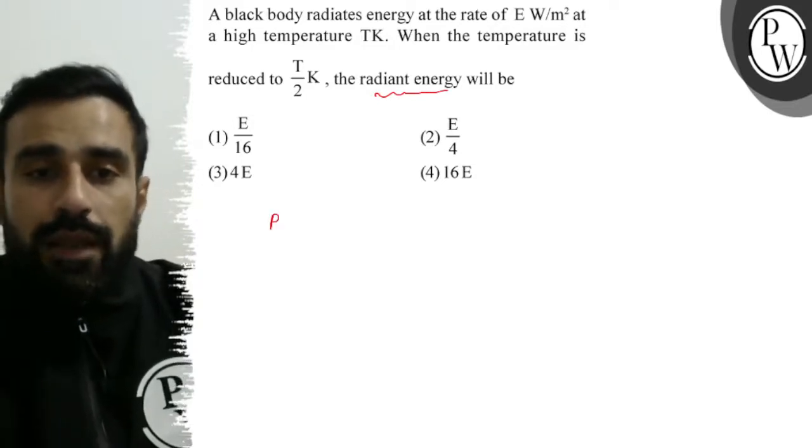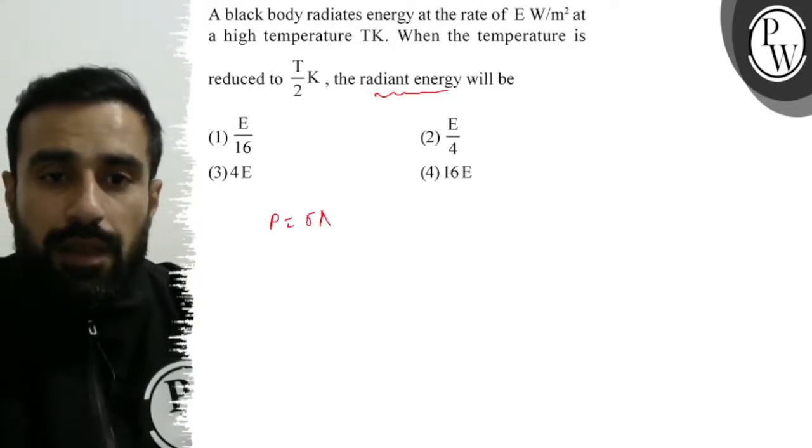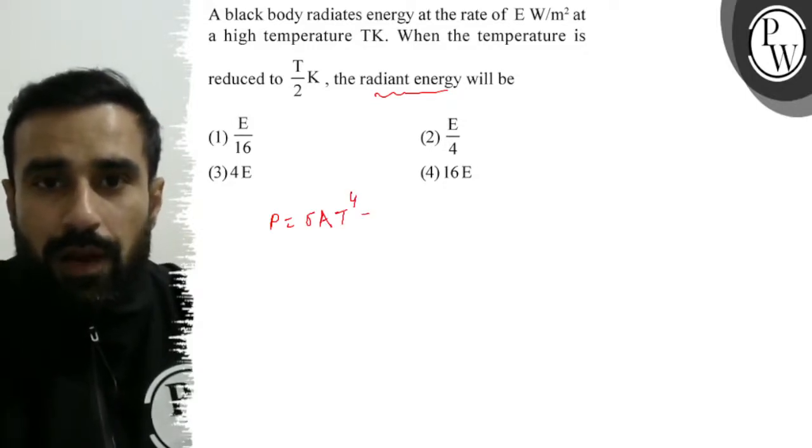The power of radiation is sigma area T to the power 4. When temperature is T, the power given is E.